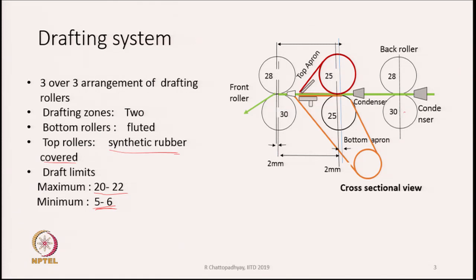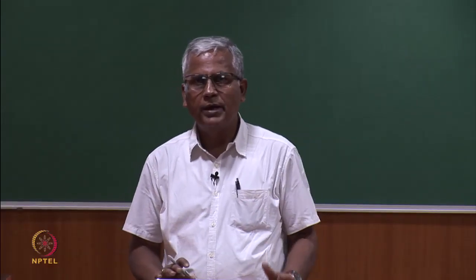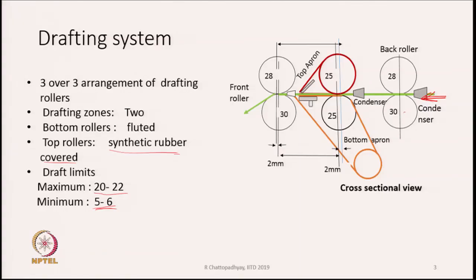In the cross-sectional view, we can see many other parts like condensers. This is the entry of sliver — it passes through a condenser where there is some stretch. It passes through another condenser and then enters the nip of the middle pair of rollers. Over the middle pair, an apron runs — there is a bottom apron shown in orange and a top apron shown in red. These aprons guide the fibers in the main drafting zone. This is the back drafting zone and this is the front drafting zone.